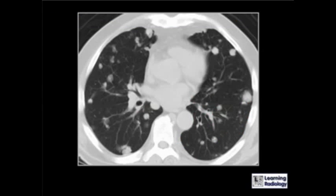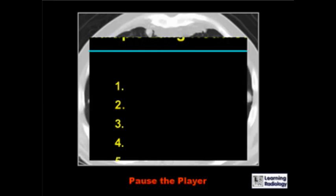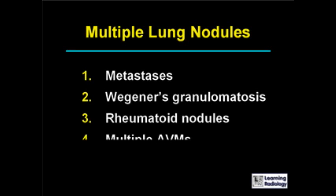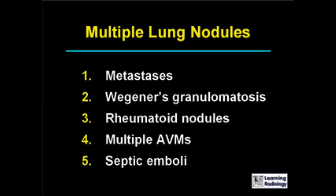The next differential is multiple lung nodules. There are five causes: metastases, Wegener's granulomatosis, rheumatoid nodules, multiple AVMs, and septic emboli.